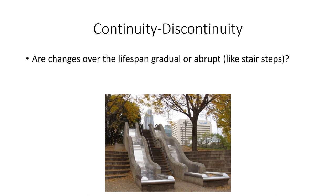The next challenge is continuity versus discontinuity. Are changes over the lifespan gradual, like a gradual slide, or abrupt, like stairs? Do we have gradual changes over time or abrupt changes? Just like the others, it's a little bit of both — more like the slides in the picture, where there are abrupt drops as well as gradual drops. We have periods of gradual change and periods of rapid change. Look at height: we have two main growth spurts, with periods of gradual change between them and stability afterward. Continuity theorists see development as gradual; discontinuity theorists see it as abrupt.